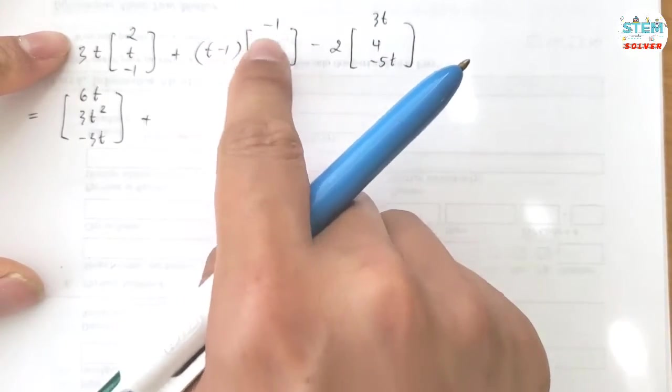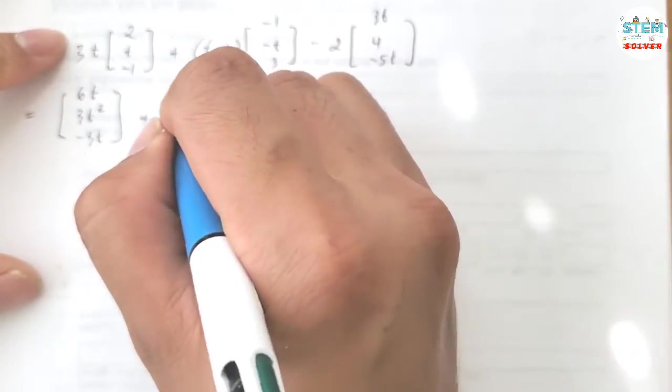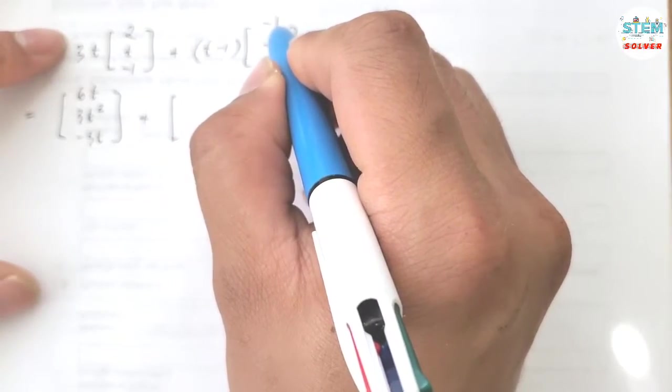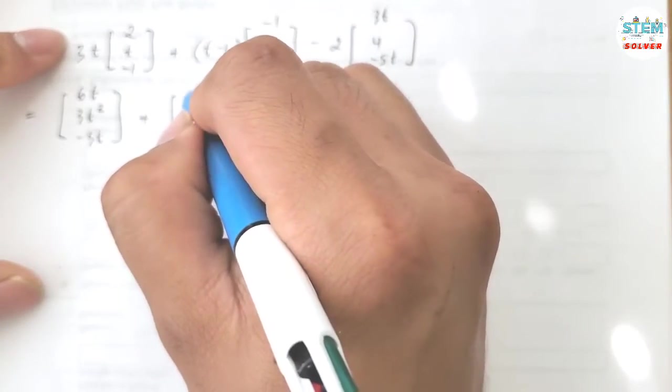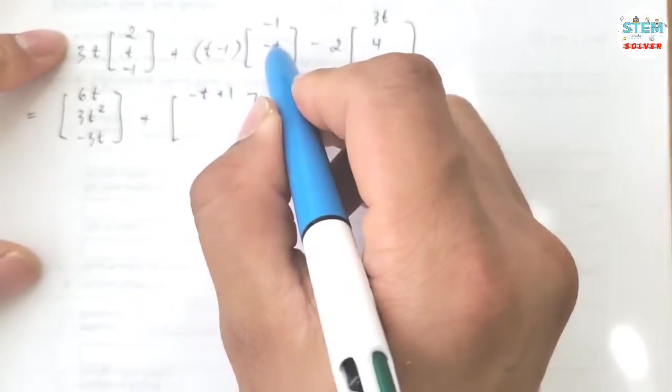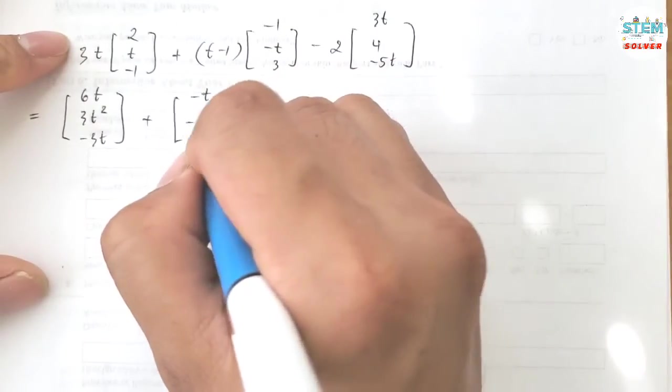For this one, multiply this by this, so distribute this to every single element here. I have t minus 1 times negative 1 which gives me negative t plus 1, negative t squared plus t, and down here I have 3t minus 3.